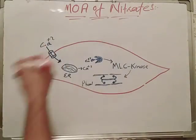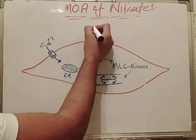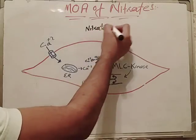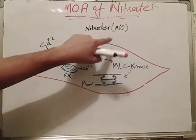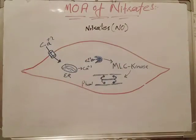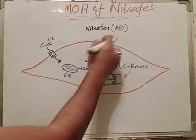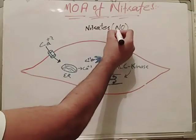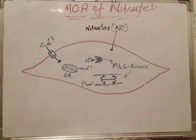In the case of nitrate action: nitrates contain nitric oxide, which is the most potent vasodilator of smooth muscle. Nitric oxide is normally present in our blood circulation, and endothelial cells release it to keep vessels dilated. When nitroglycerine enters the smooth muscle, it initiates a specific signaling pathway.